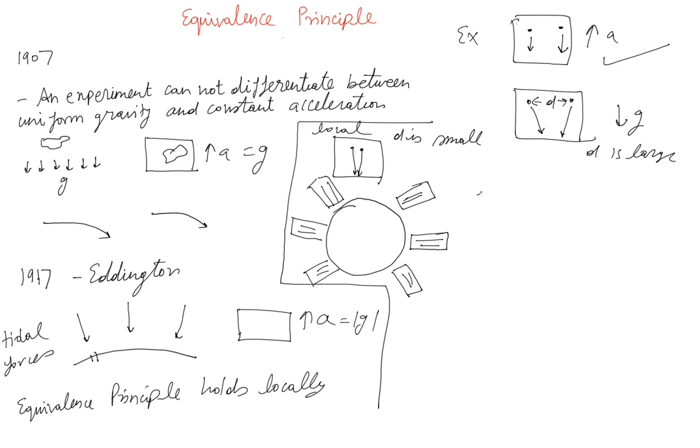Now, the thing is for local equivalence principle to hold, the local spacetime should be flat. This is a requirement. If this is not flat, you can again do the same thing, you can differentiate between the two experiments.